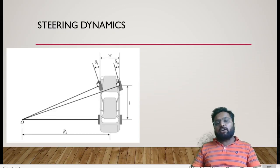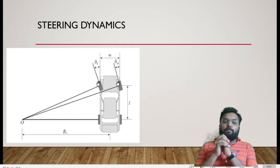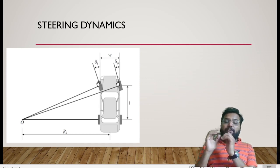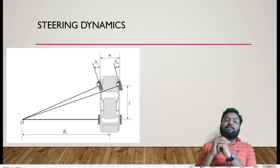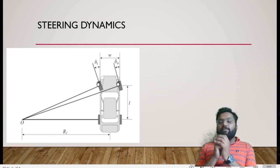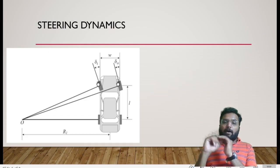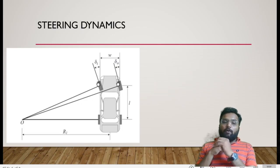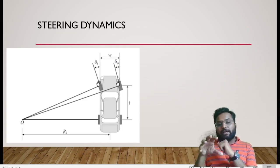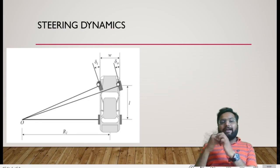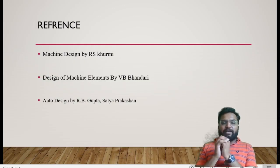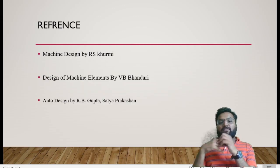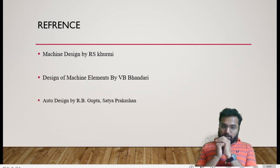So in this particular session, we have discussed different aspects of the chapter on Design of Steering System, including the different types of steering systems. In the next video we will discuss one or two types of steering systems, and in the third video we will discuss the types of steering mechanisms — whether it is Davis mechanism or Ackerman mechanism. The reference material for this video is Machine Design by R.S. Khurmi as well as Auto Design by R.B. Thank you.